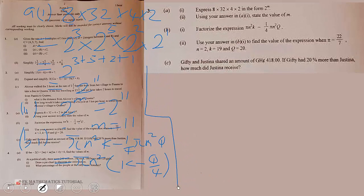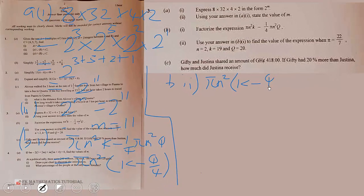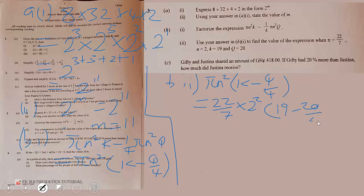The next thing we are going to do is substitute the values. For part B(ii), when n equals 2, π equals 22 over 7, k equals 19, and q equals 20, we substitute into the bracket: πn² times (k minus q over 4) becomes 22 over 7 times 2 squared times (19 minus 20 over 4).